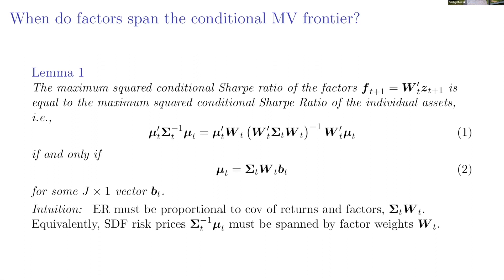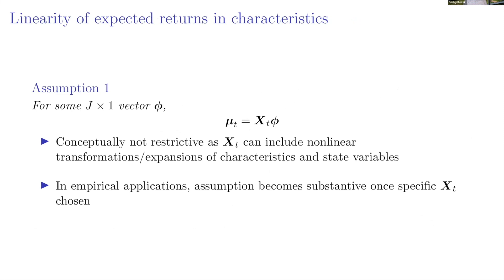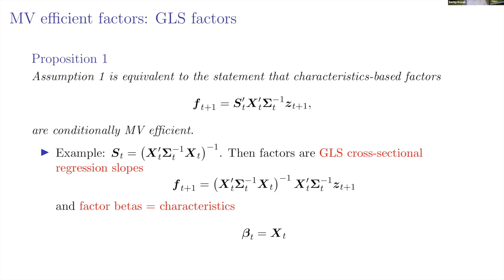We add another assumption on top of this condition, which yields interesting results. The assumption is that mean returns are linear in stock characteristics. We don't consider this very restrictive — if you're worried about non-linearities, you can always expand X to include squares or interactions of characteristics. So X can be a very large matrix including those non-linearities, and theoretically we're still fine.